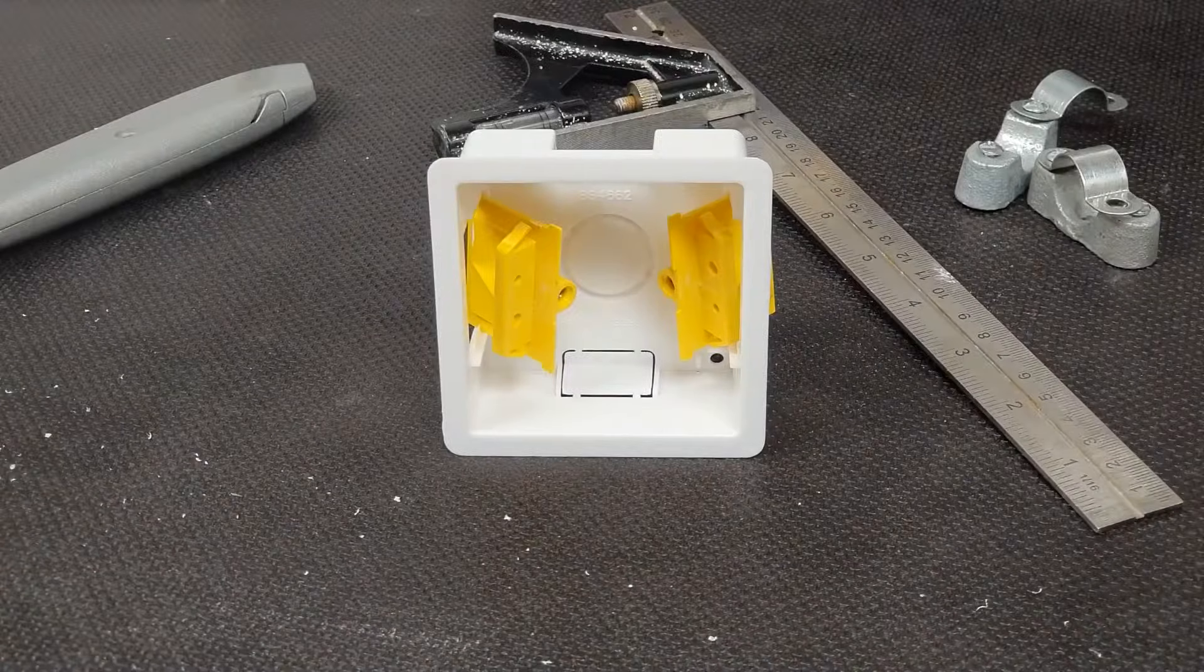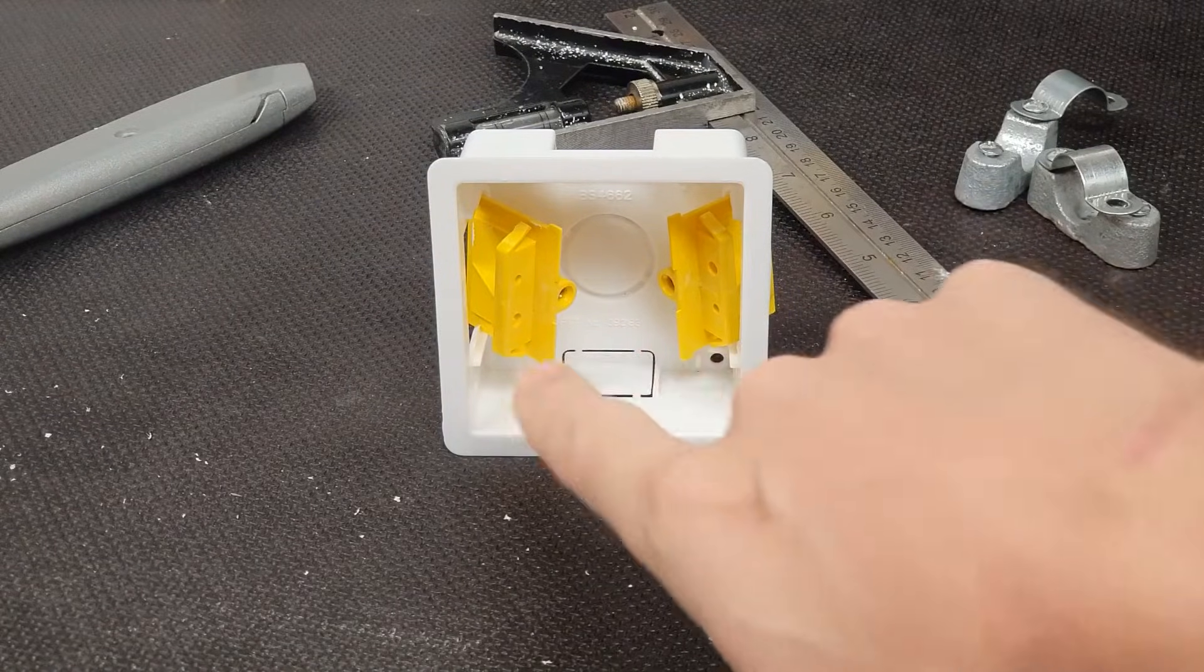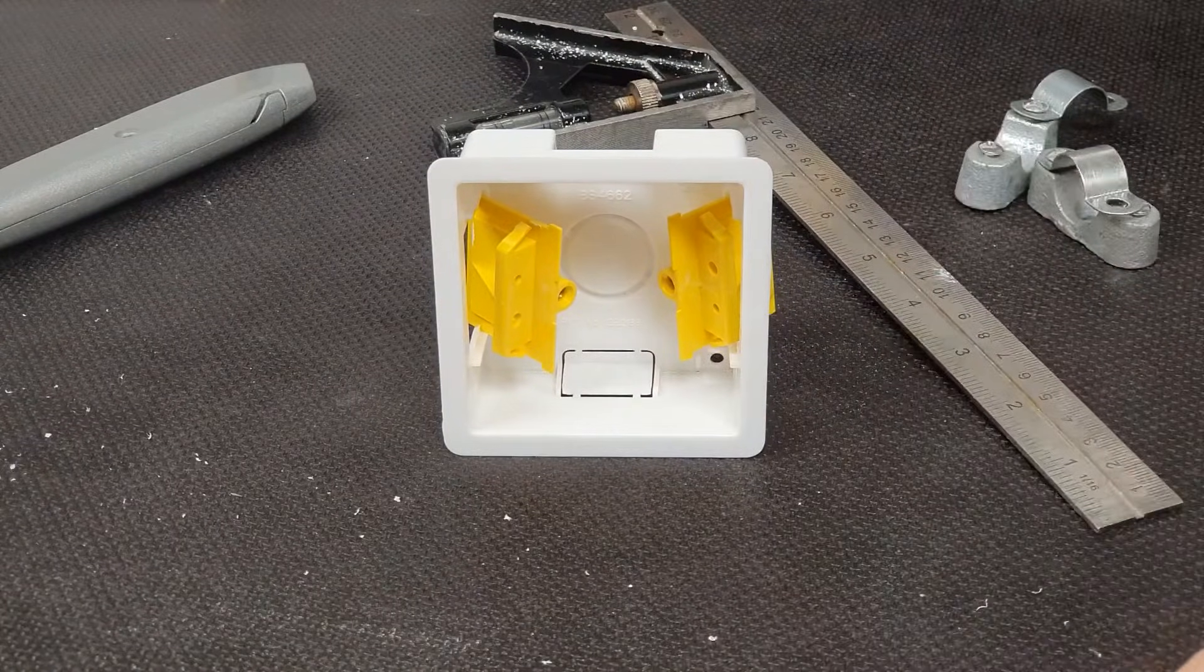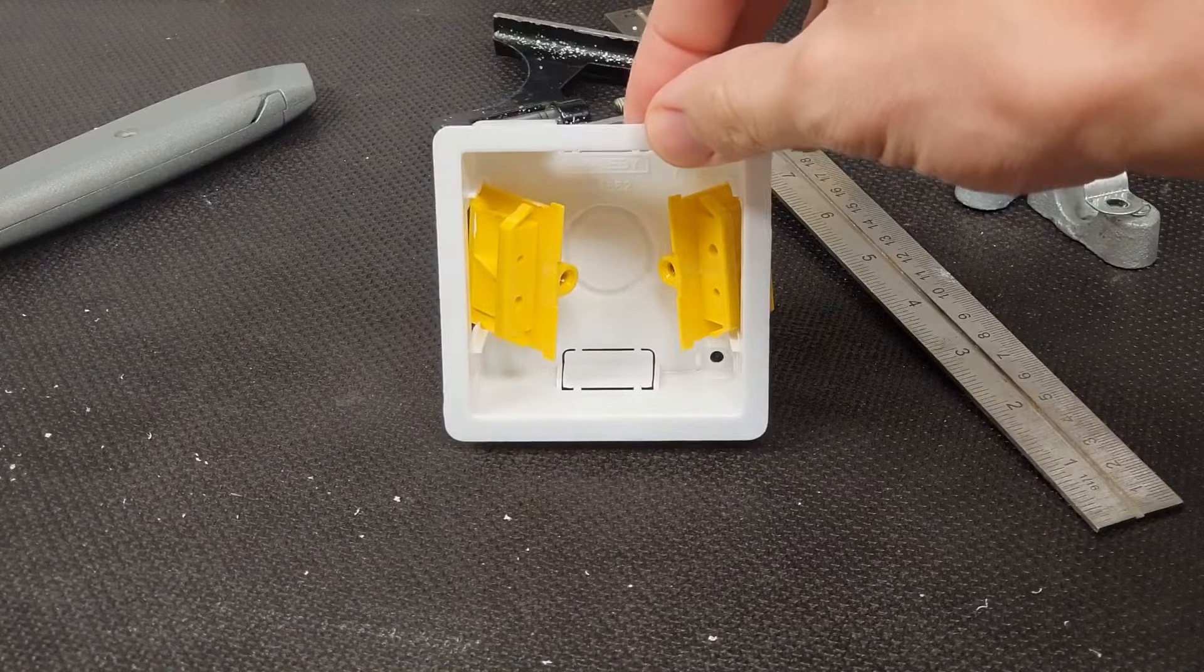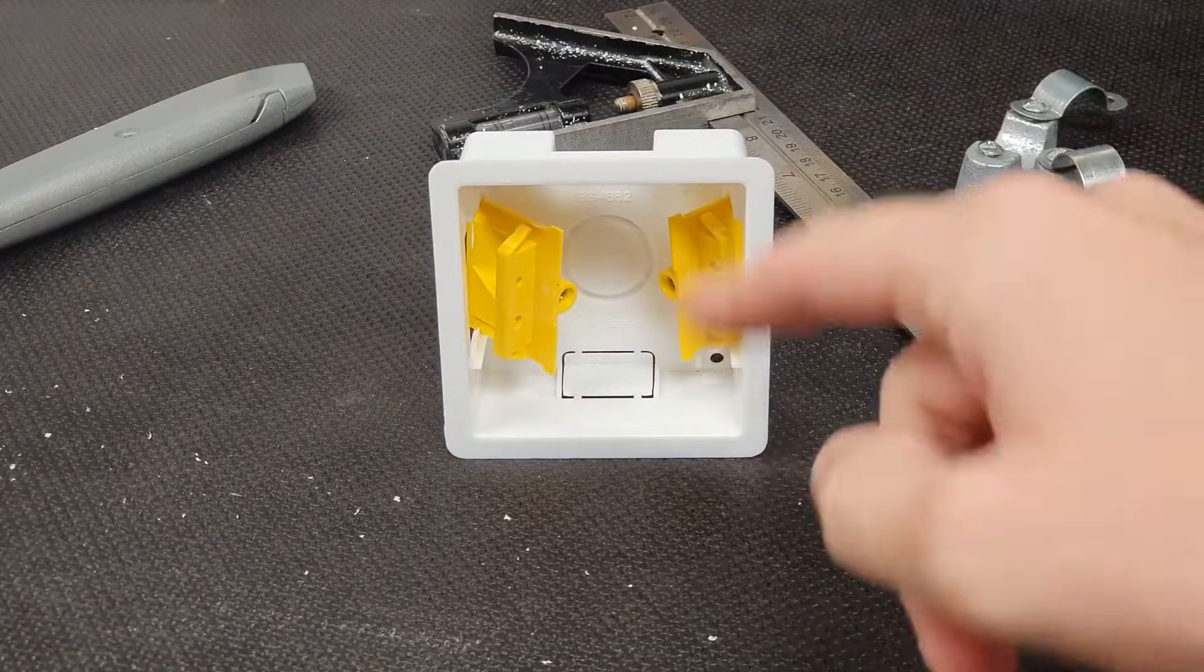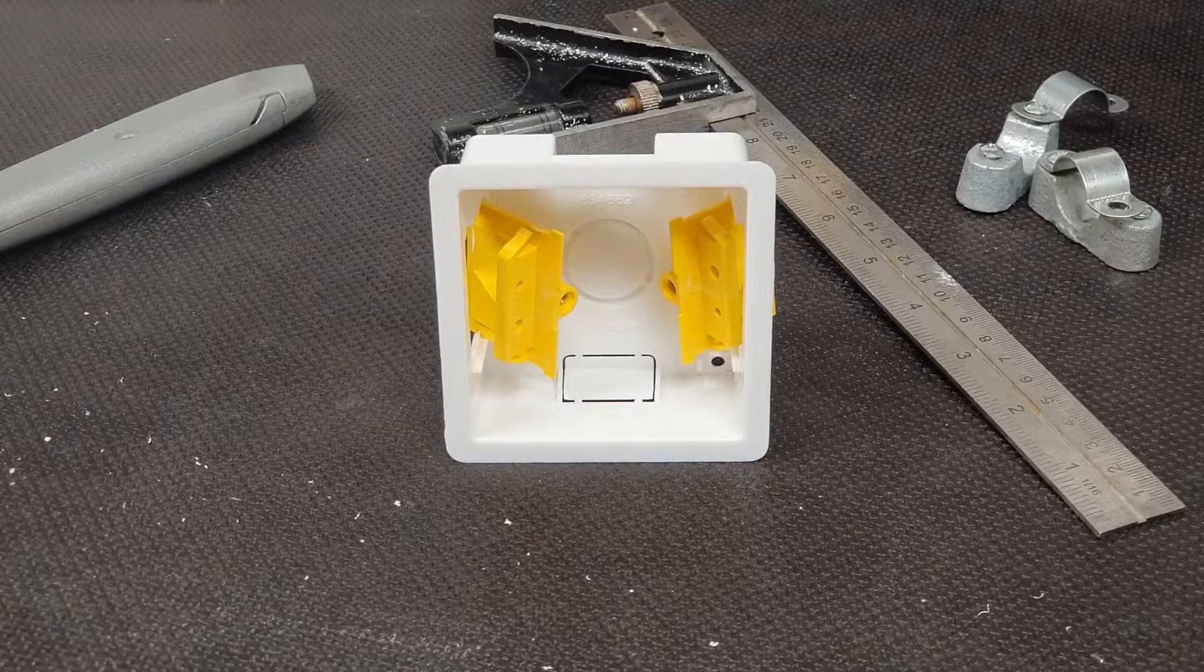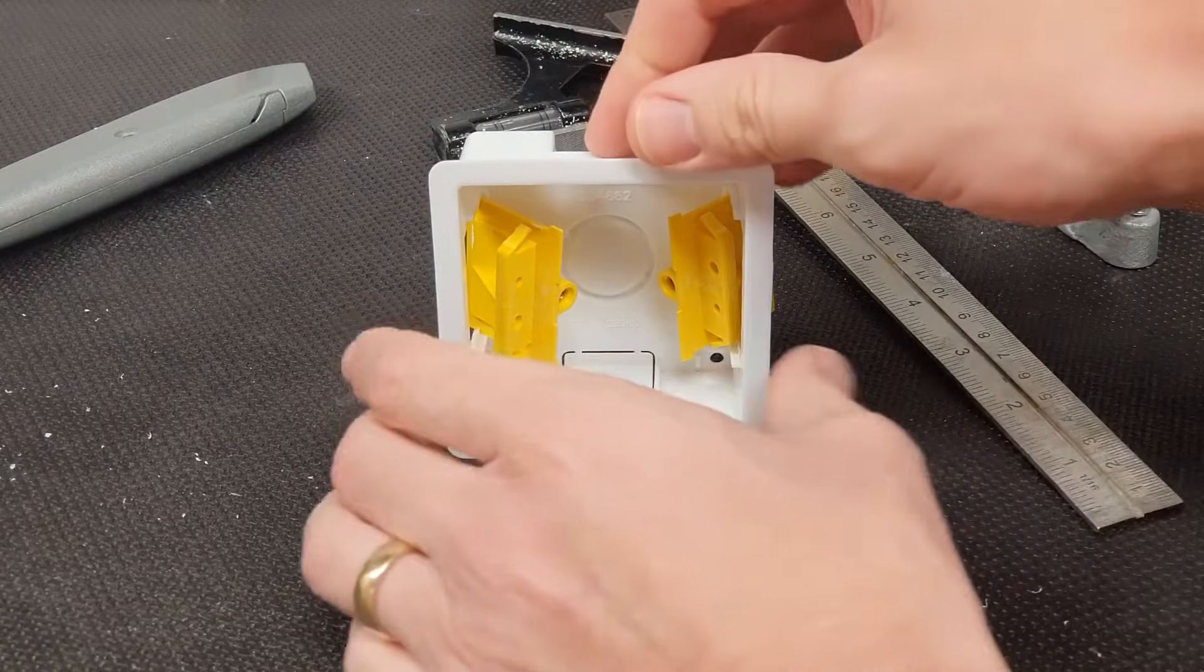We're back at the studio now and just having a look at this third type of plasterboard fixing box here. There's lots of others available. This one is an Appleby one, and this is fairly common actually. You'll see this in an awful lot of different places. Exactly the same principle, but just a slightly different method.